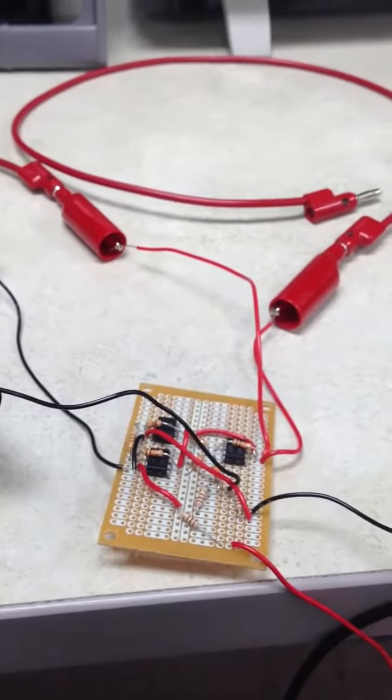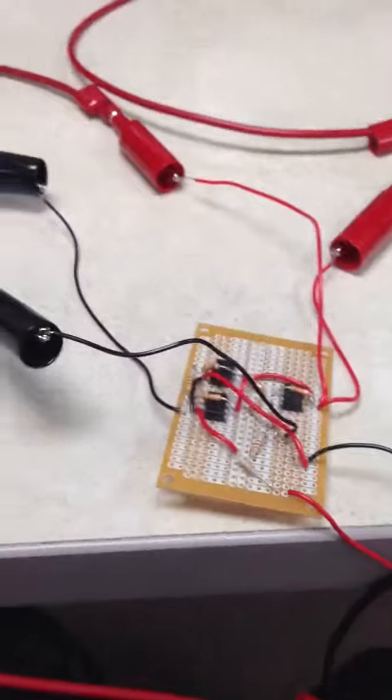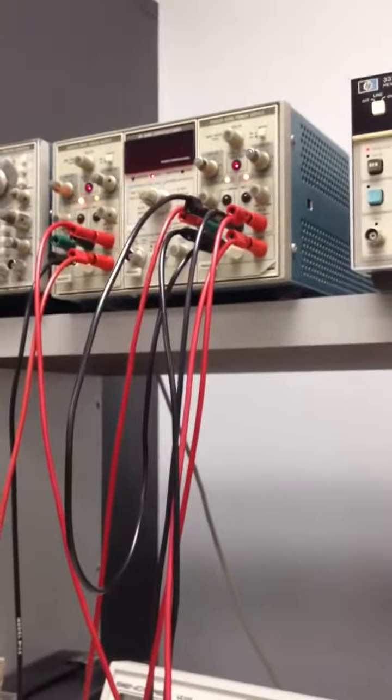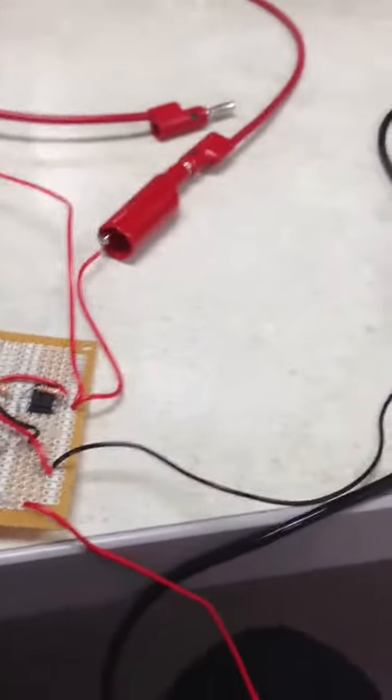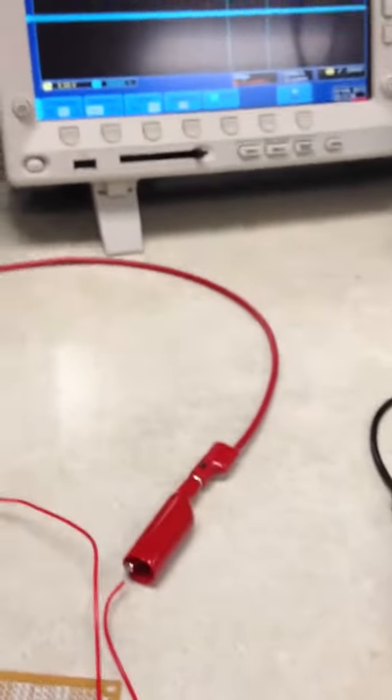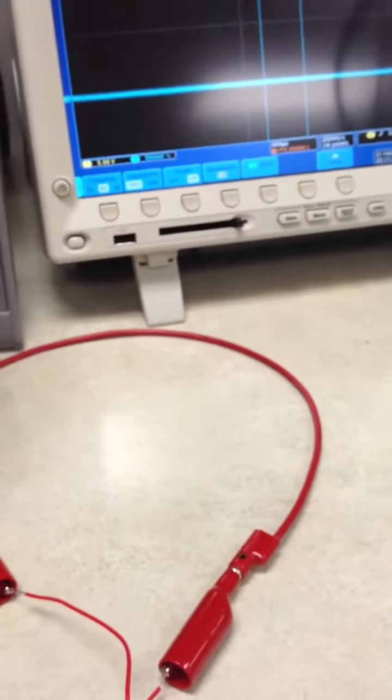I'm going to show the changing voltage as I apply force to the strain gauge. I connected the integrated circuit to the power supply so I can turn on the amplifiers. I'm going to add it to the voltmeter.